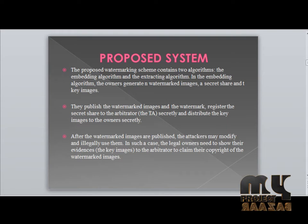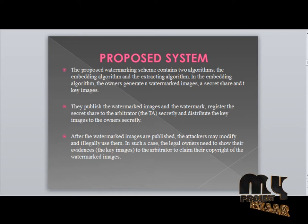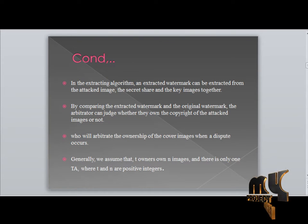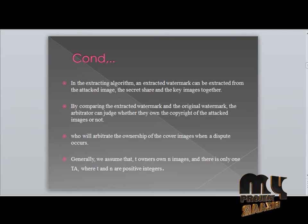The proposed scheme addresses disadvantages of existing schemes by incorporating noise reduction and error correcting code techniques for robustness. It contains two algorithms: an embedding algorithm and an extracting algorithm. In embedding, the owner generates n watermark images, secret shares, and keys, then publishes and registers the watermark and securely distributes the key. After watermark images are published, illegal modifications can be tracked. The extracting algorithm recovers the watermark using the secret key to prove ownership of the cover image.